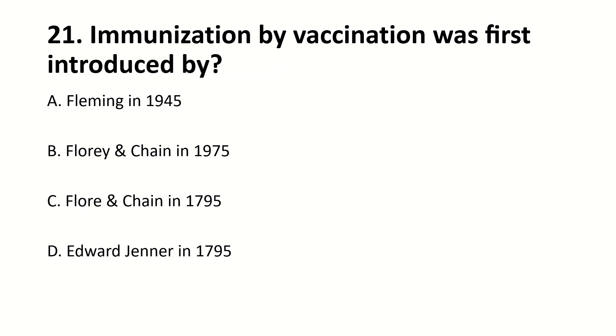The answer is D — discovered in 1795. How many vaccines have been given? I think it's true. DNA vaccine and all that stuff.